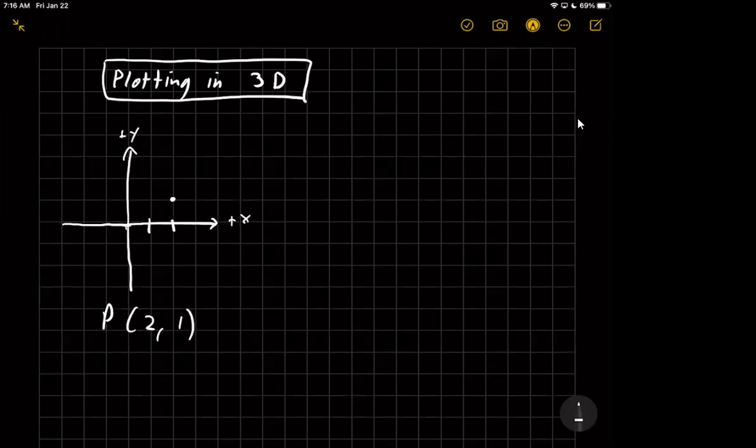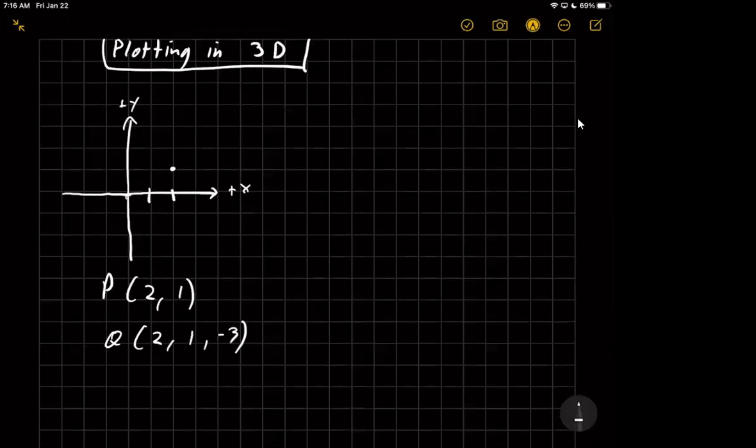But what if I had a point that was, let's go with Q, that was 2, 1, negative 3? That would allow us to put that point in three-dimensional space. It would be 2 in the x-direction, 1 in the y-direction, but then we have our third direction, which is the z-direction. So this would be our x, y, and z-coordinate.